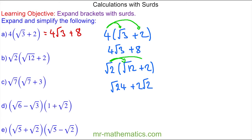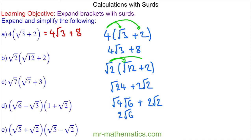Now we can simplify root 24 because it has a square factor: root 24 equals root 4 times root 6, plus 2 root 2. The square root of 4 is 2, so we have 2 root 6 plus 2 root 2.